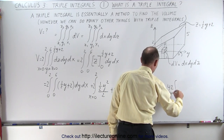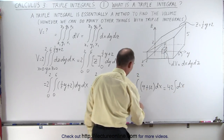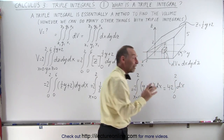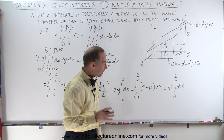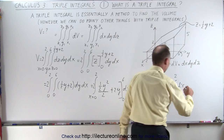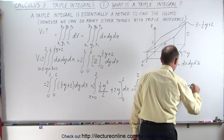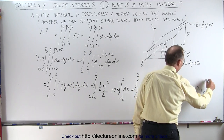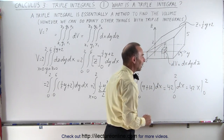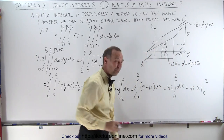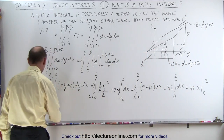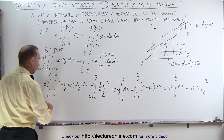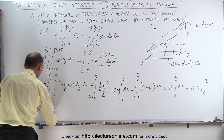Now we do our last integral in the x direction. This equals 42 times x evaluated from 0 to 2. Plugging in the upper limit gives 2, the lower limit gives 0. So we get the volume equal to 2 × 42 = 84.